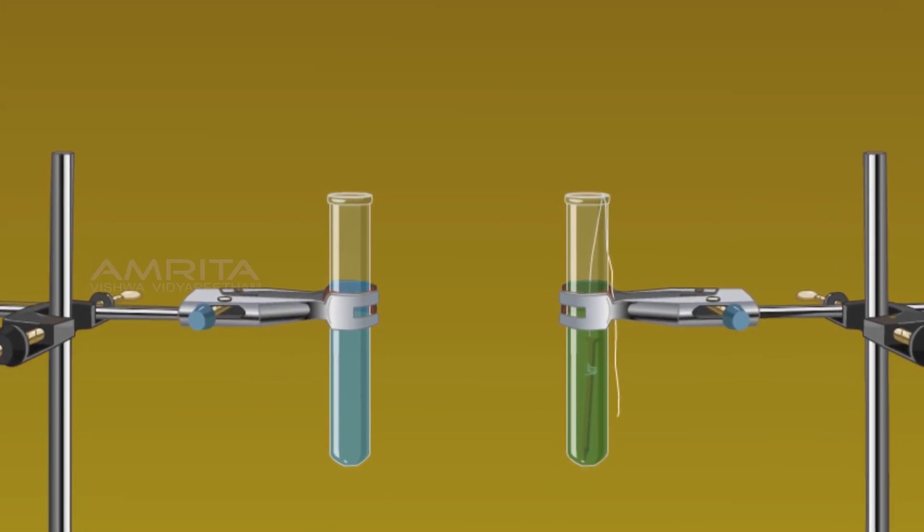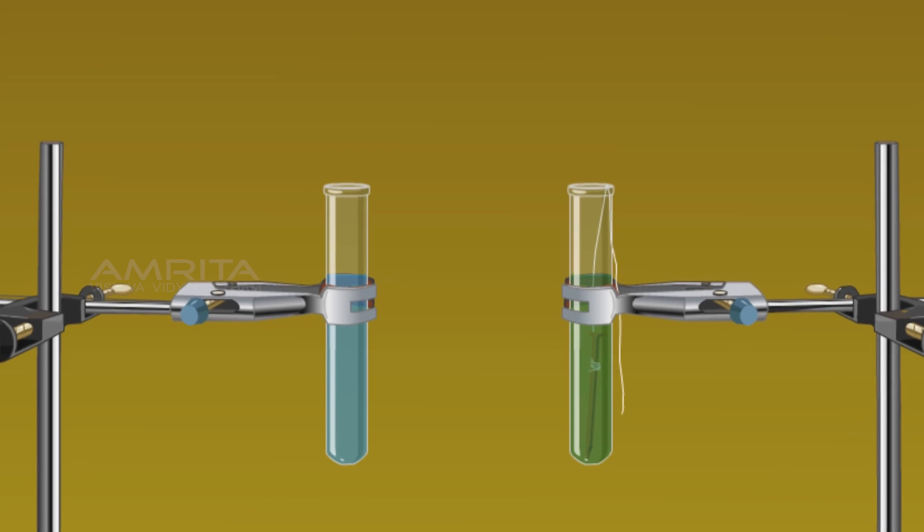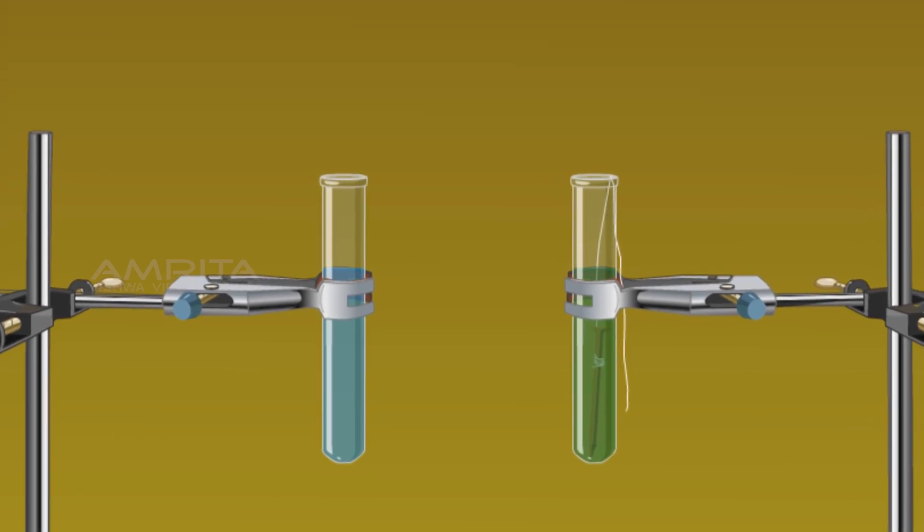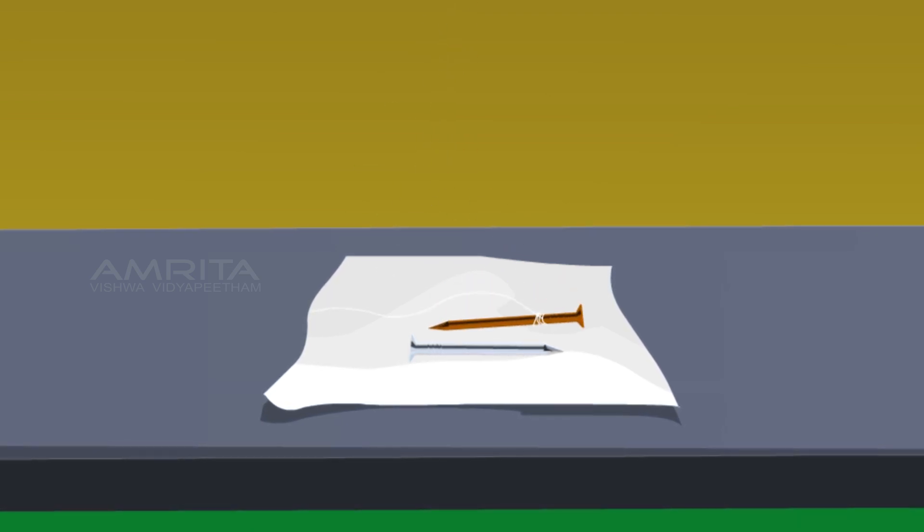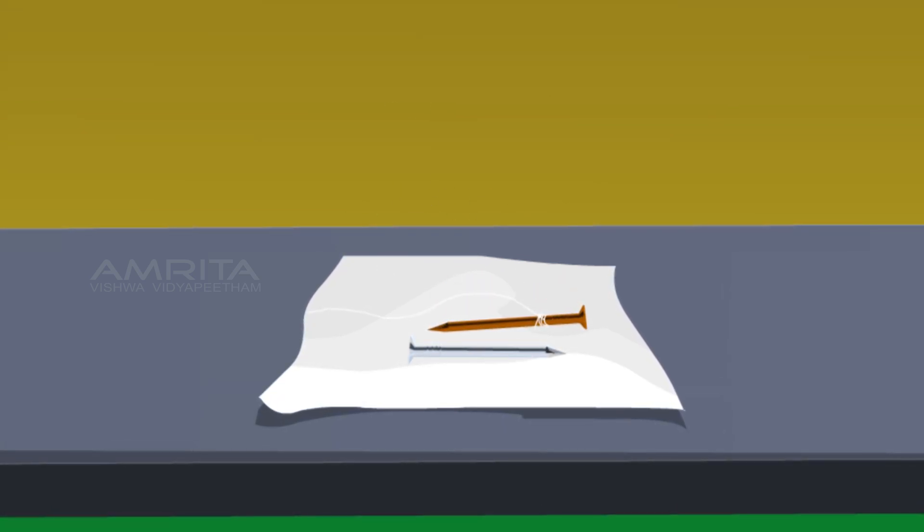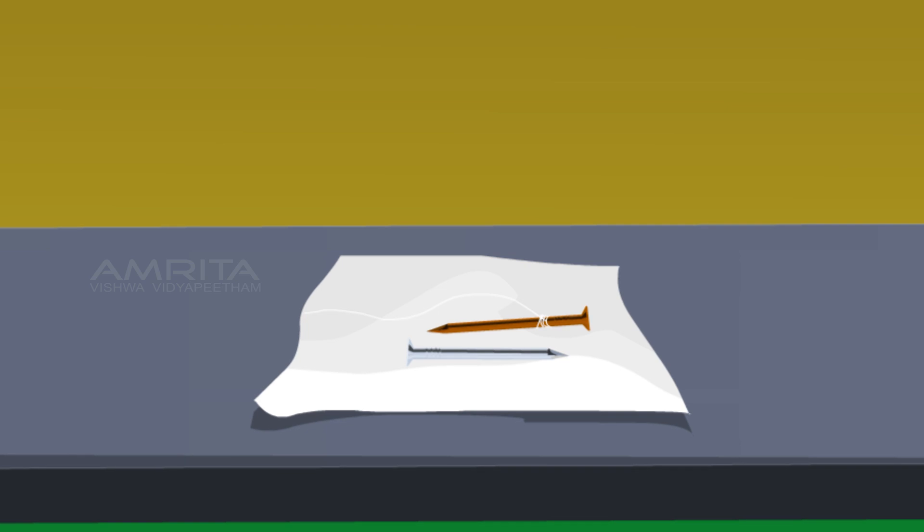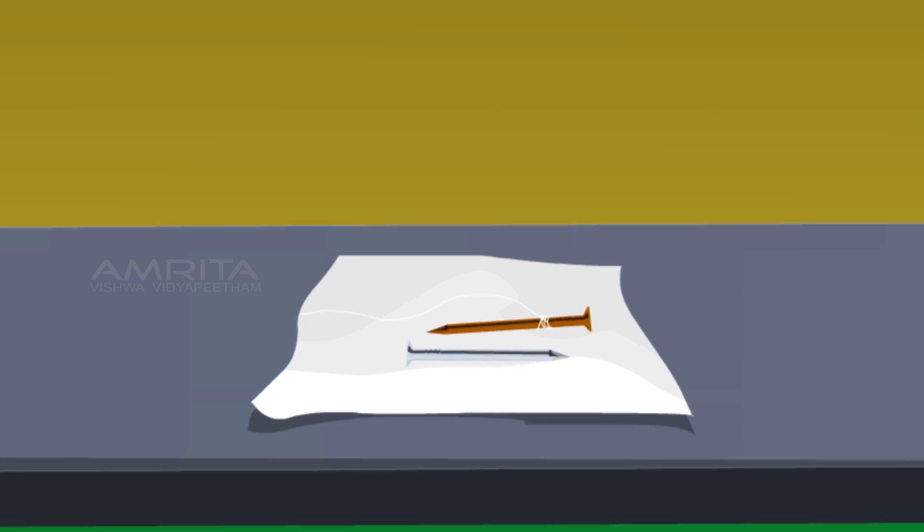The greenish colour of the solution is due to the presence of Fe2+ ions. Remove the iron nail from the solution. Compare it with the other nail. There is a brown coating of copper on the nail that was dipped in the copper sulphate solution.